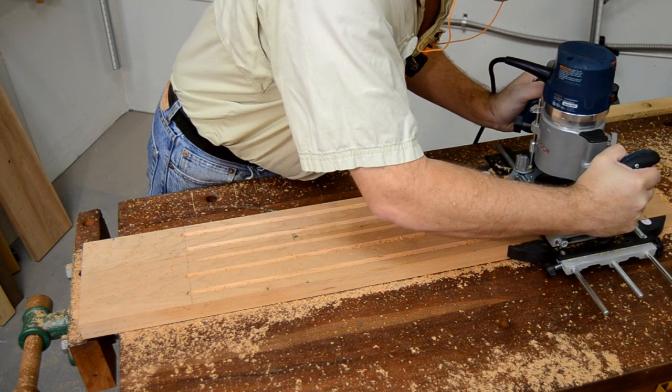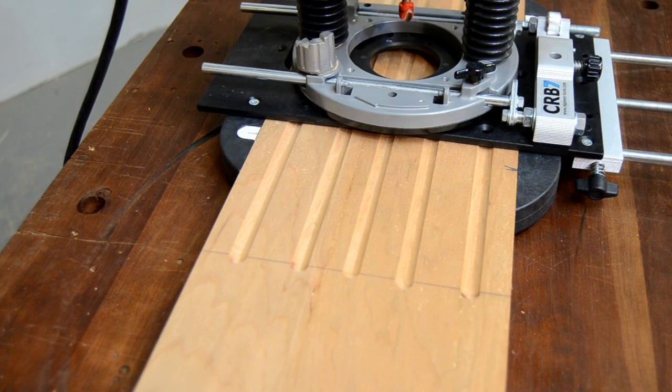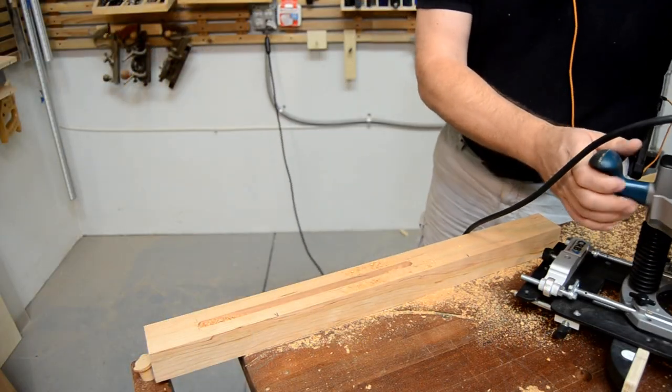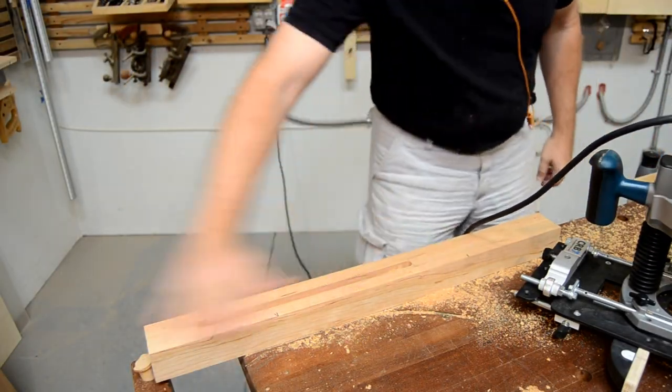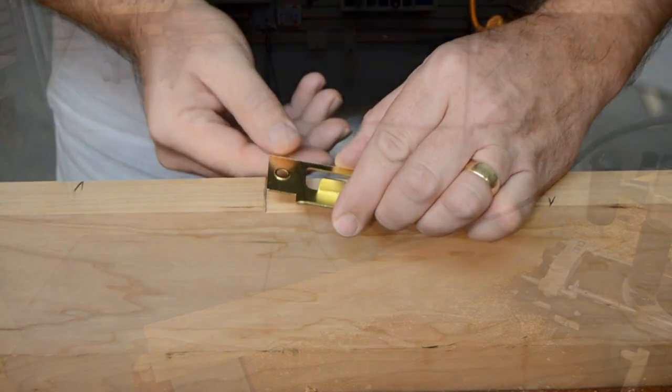Whether you're cutting for joinery, locks, or hinges, the MHL accessory for the CRB7 router base makes it easy, fast, and accurate.